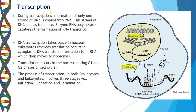In this video lecture we will see the first step in protein synthesis, that is the process of transcription. During transcription, information of only one strand of the DNA is copied into RNA. This strand of the DNA acts as a template. The enzyme RNA polymerase catalyzes the formation of the RNA transcript. DNA transcription takes place in the nucleus in eukaryotes, whereas translation occurs in the cytoplasm. DNA transfers information to mRNA, which then moves to the ribosome. Transcription occurs in the nucleus during G1 and G2 phase of the cell cycle. The process of transcription in both prokaryotes and eukaryotes involves three stages: initiation, elongation and termination.